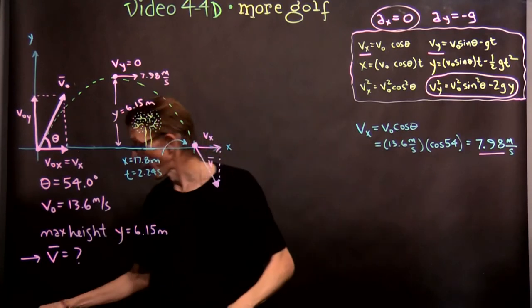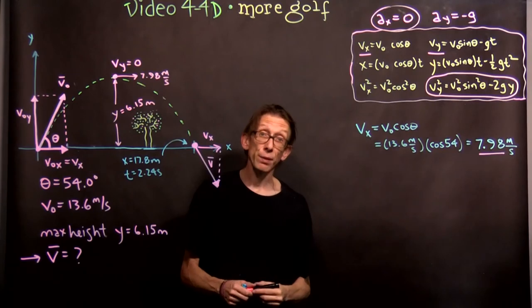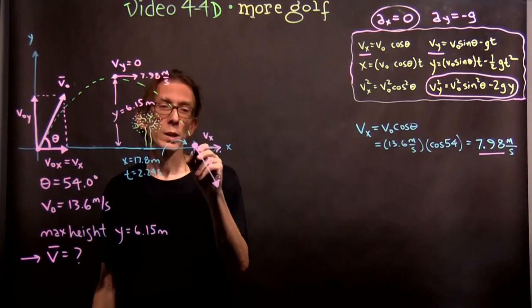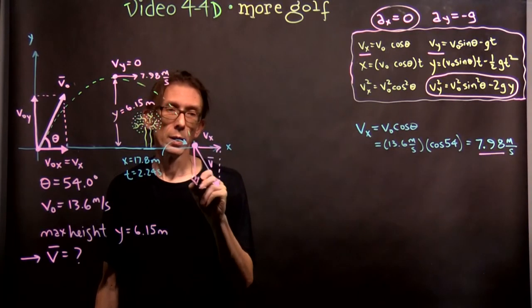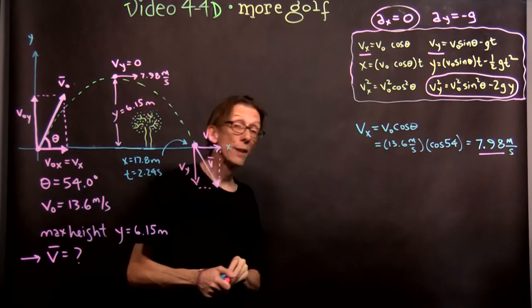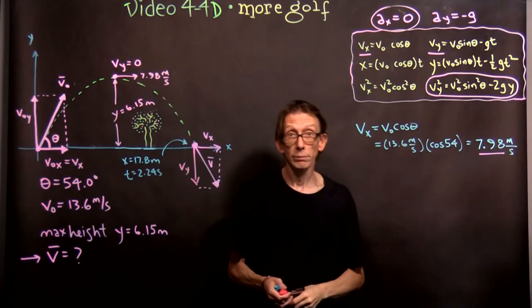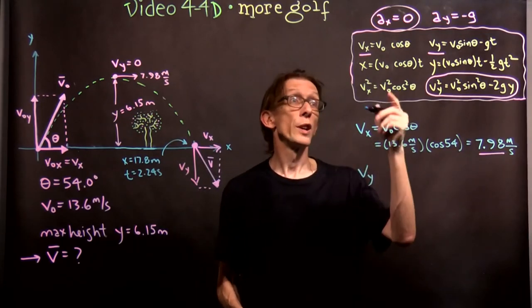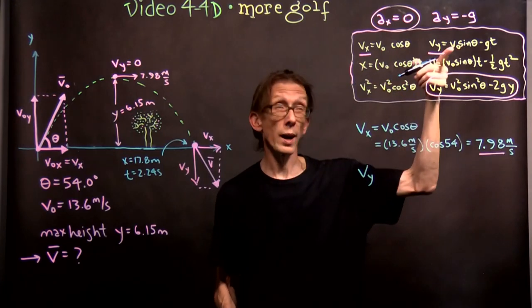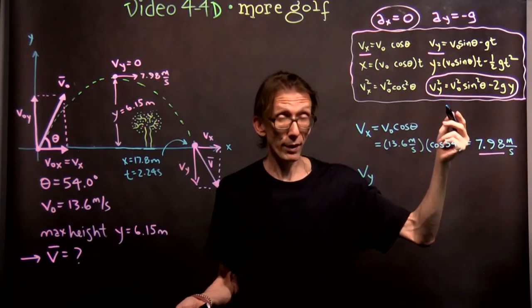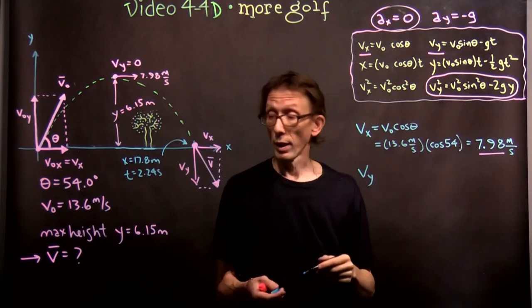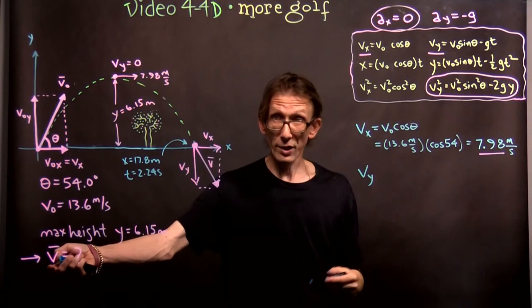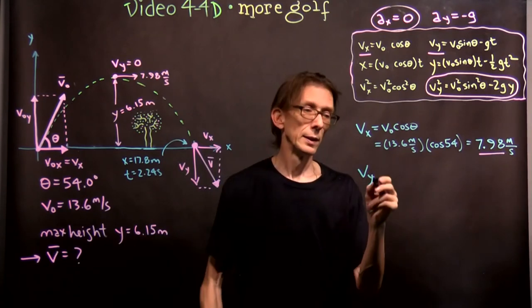That's the x component. Now, what do we think we're going to get for the y component? Well, we expect to get something negative, because it's going down and to the right. We expect to get a component that looks something like this. Vy. So we better get a negative number when we do it. Vy. We're using equation 1 here, for both x and y. Because we're looking for the components of the velocity. We're asked for the total velocity. But to find the total velocity, you've got to know the components of the velocity, the parts of it.